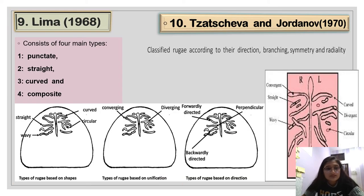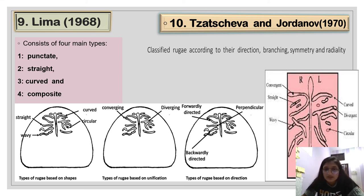The ninth classification is Lima's classification in 1968, which consists of four main types: punctuate, straight, curved, and composite.